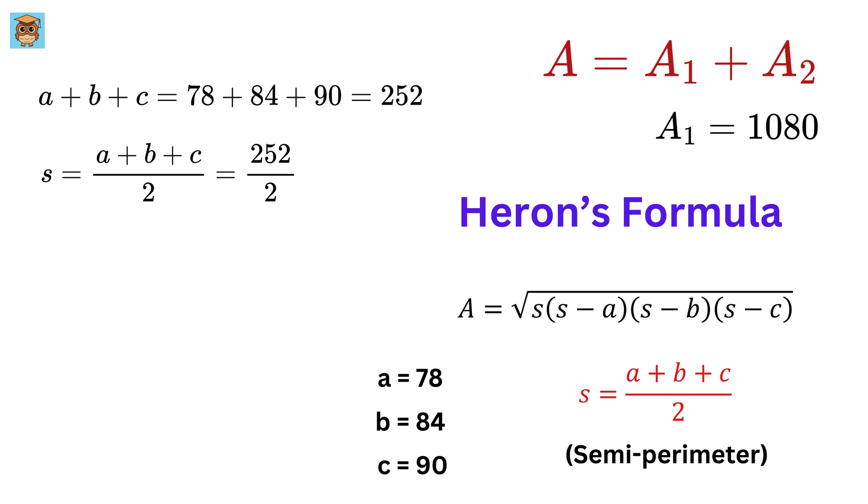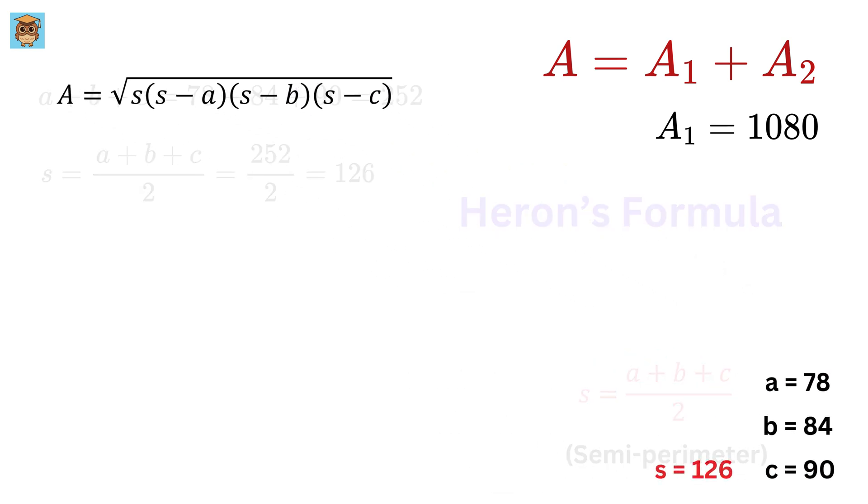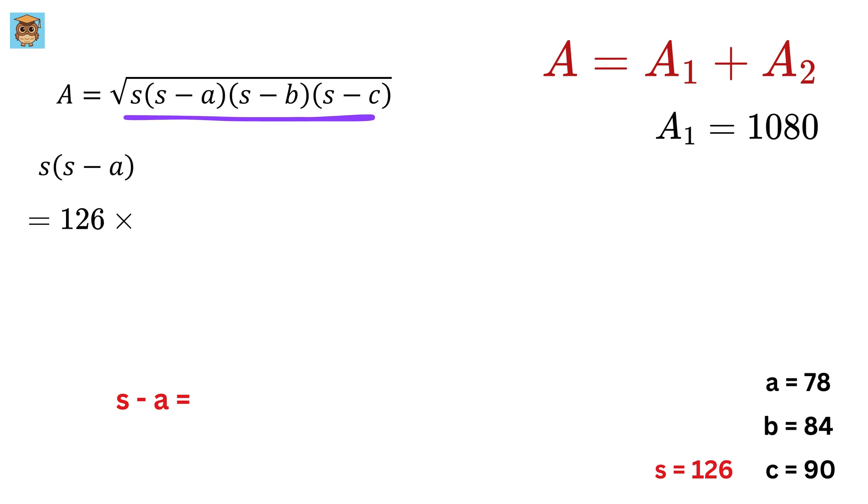Now let us use this formula. We have s as 126, then s minus a equals 126 minus 78 or 48, then s minus b equals 126 minus 84 or 42, and finally s minus c equals 126 minus 90 or 36. Thus multiplying all of them gives this.